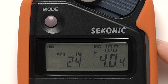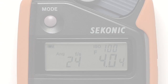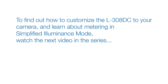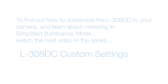Pressing the meter button now will display a new reading. To find out how to customize the L308 DC to your camera and learn about metering in simplified illuminance mode, watch the next video in the series: L308 DC custom settings.